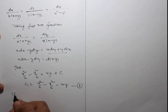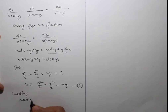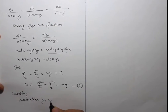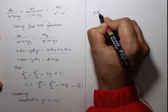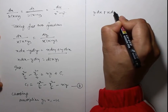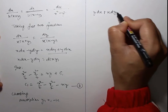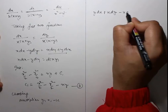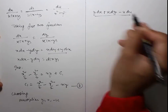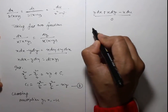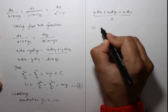To find c₂, we choose multipliers y, x, and -u. Then y dx + x dy - u du = 0, which gives d(xy) = u du.